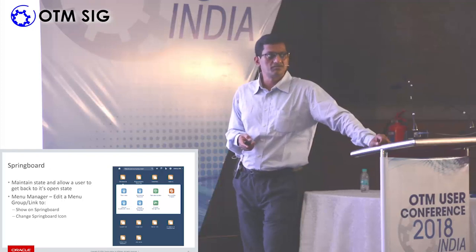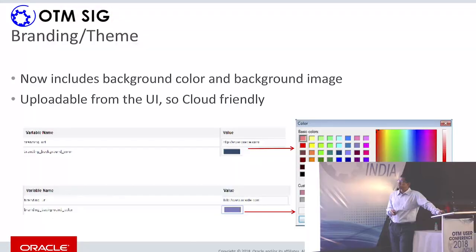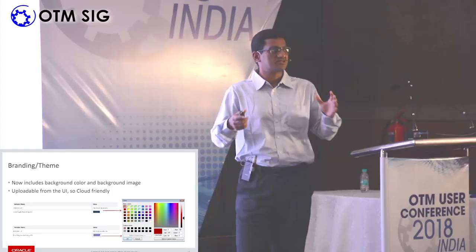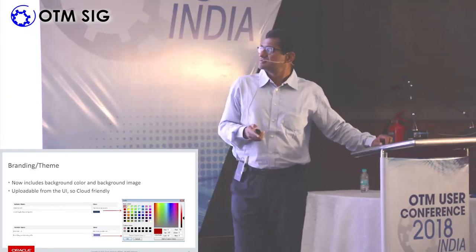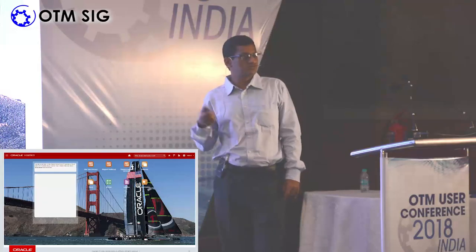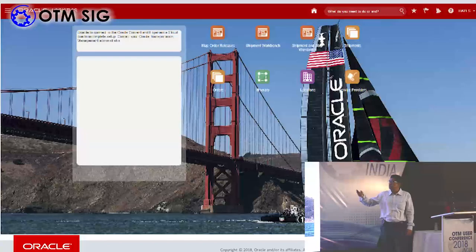On branding and theme, there is now an option to change the background color as well as the URL. All of this can be done directly via the UI itself — unlike some on-premises features that required file system changes. Nothing of that nature is required here. This shows how you can do theme management and branding with logos and background color changes.